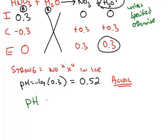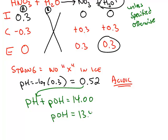And we can then use the formula pH plus pOH equals 14 to calculate the pOH, which is 13.48.